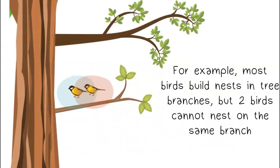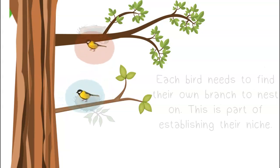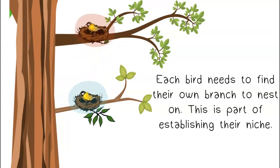For example, most birds build nests in tree branches, but two birds cannot nest on the same branch. Each bird needs to find their own branch to nest on. This is part of establishing their niche.